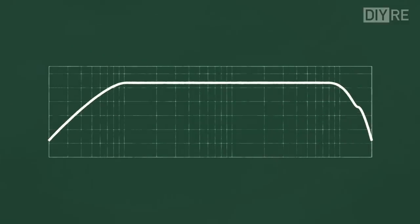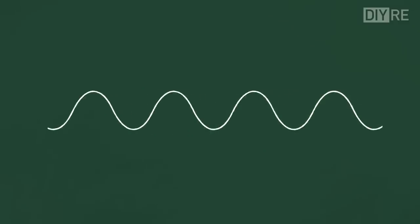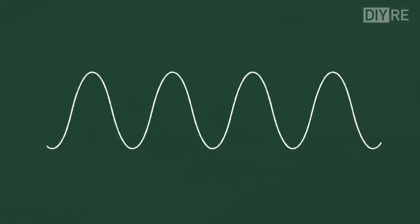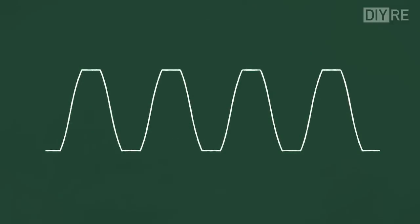Like all analog components, transformers clip when given too much signal. Transformer clipping happens when the core saturates, and can't contain any more magnetic flux. This sets a hard limit on the amount of signal the transformer can pass, and generates harmonic distortion.